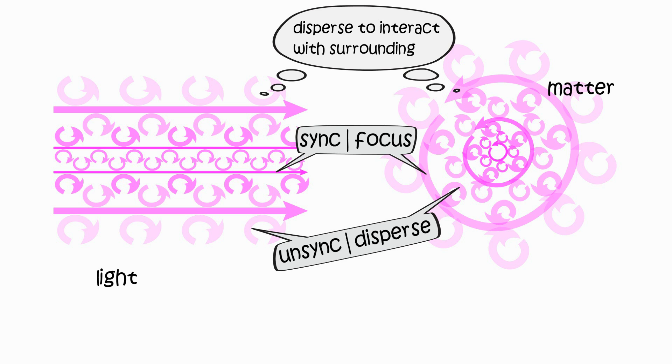Thus, light can only travel in a straight line, else it will disperse into unsynchronized momentum, unless the bend is caused by gravity, which is technically still traveling in a straight line.